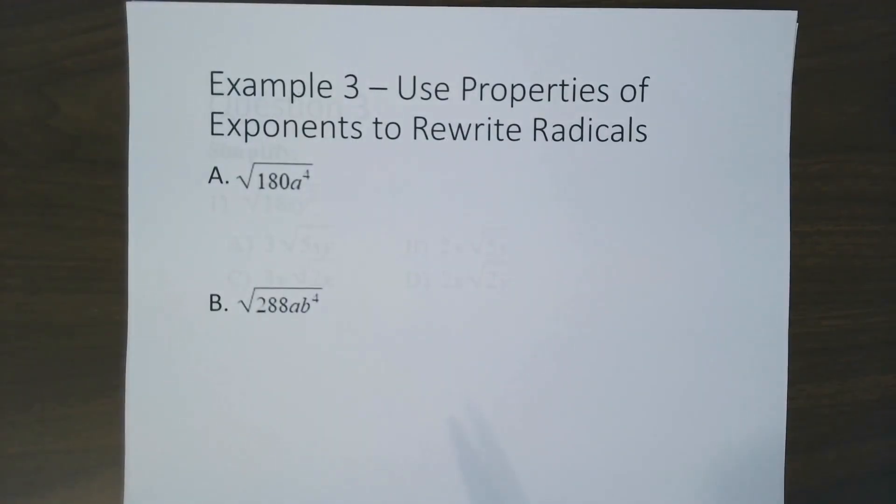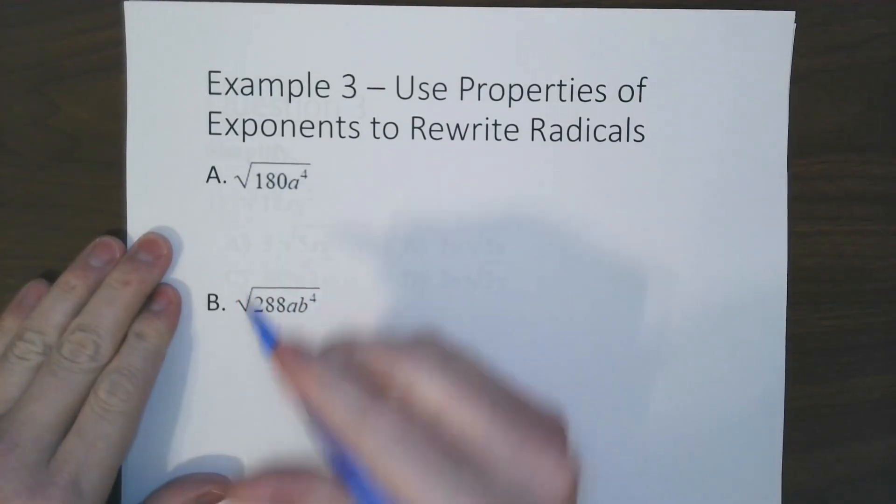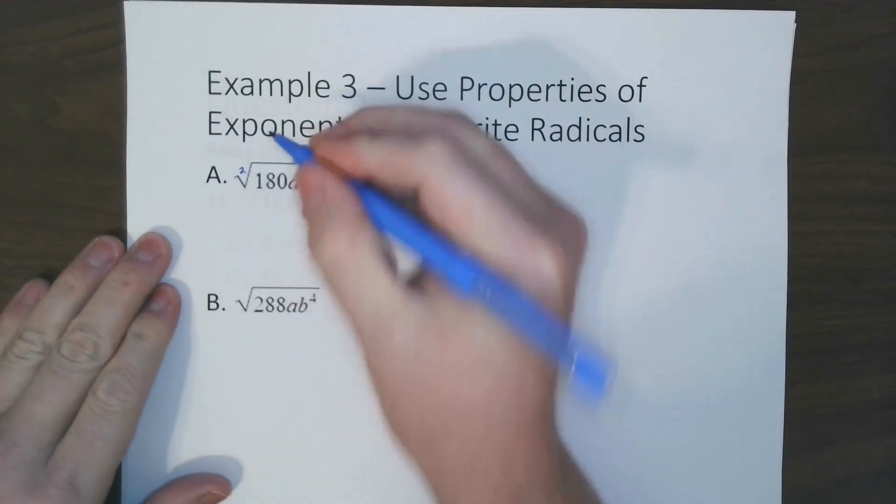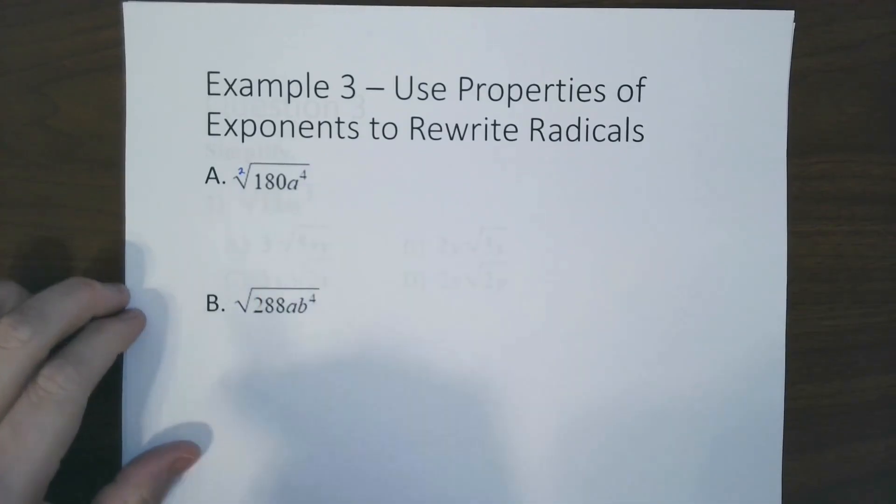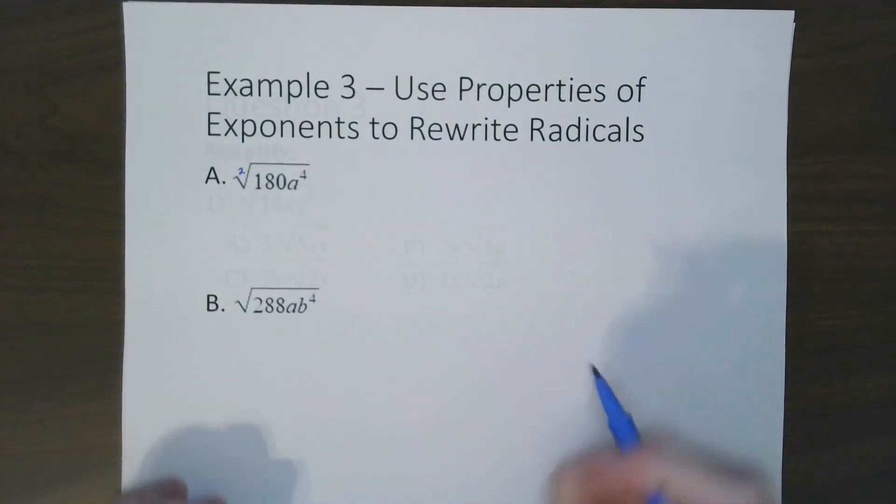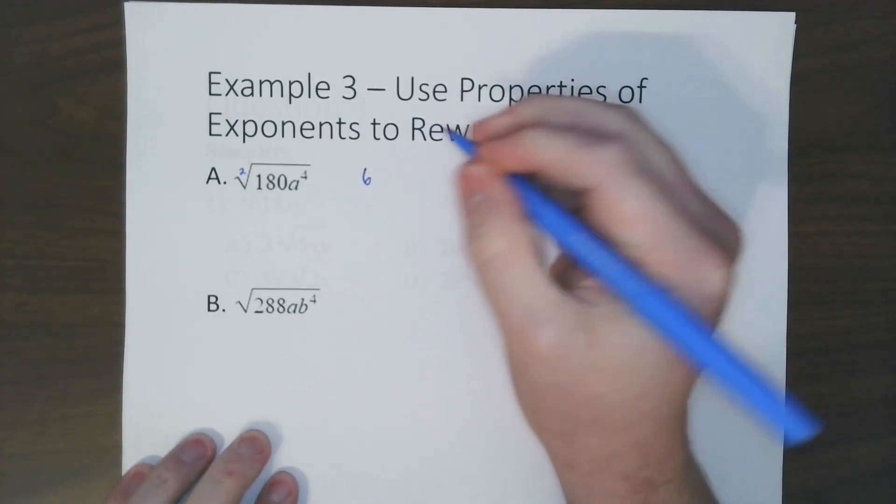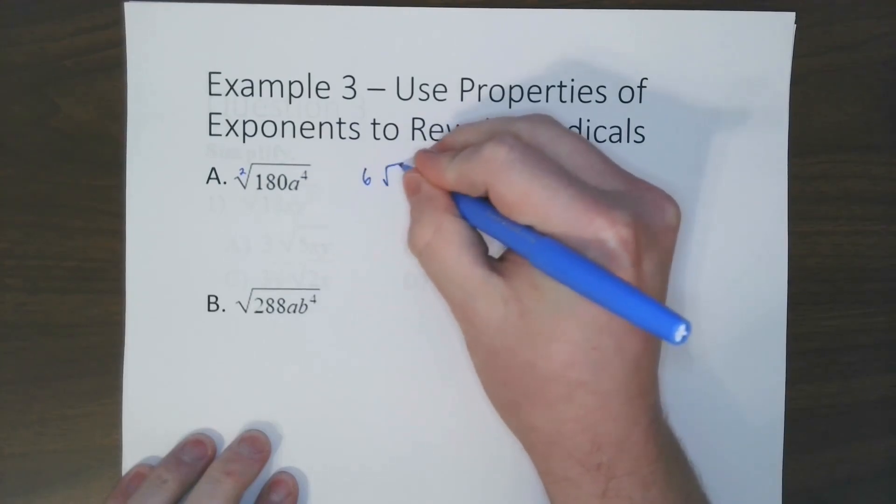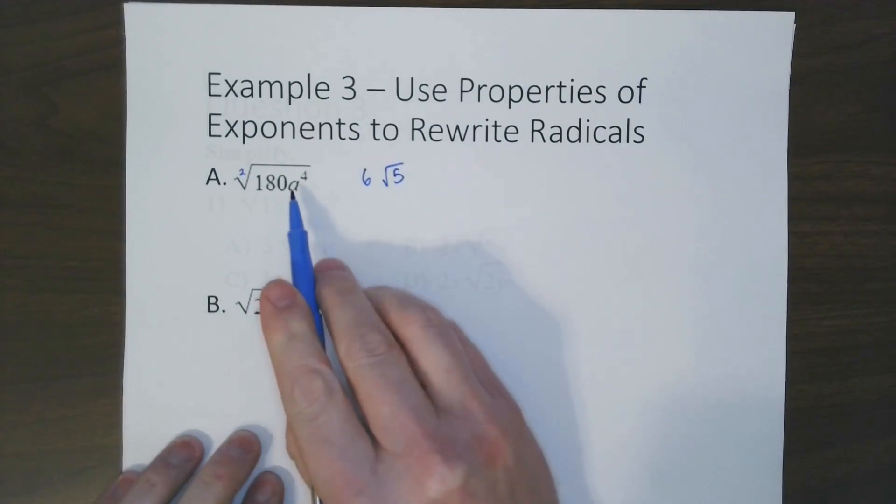Now let's use properties of exponents to rewrite radicals. So the first thing to note is this is a square root. So you can imagine a little 2 right there. We never write the 2 because it is the lowest root you can have. So for the 180, just split it apart like normal. So when you split apart square root of 180, you get 6, leave a space, and then radical 5.